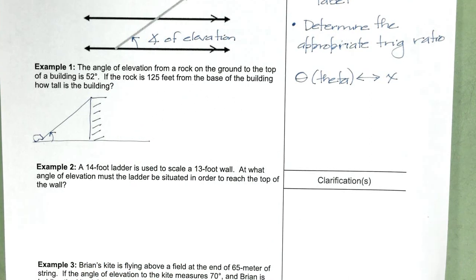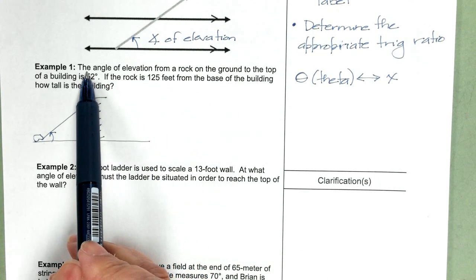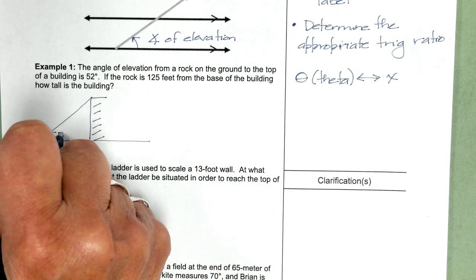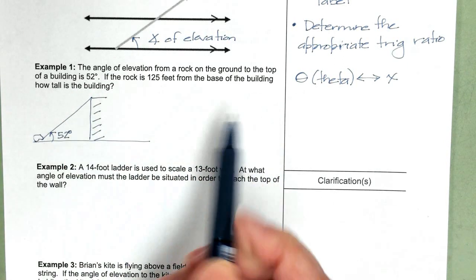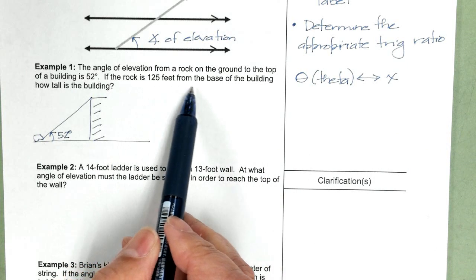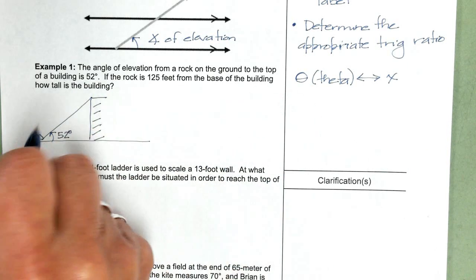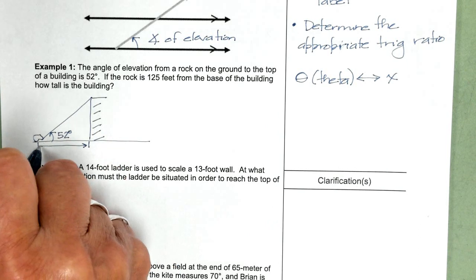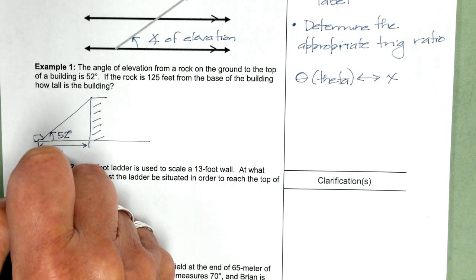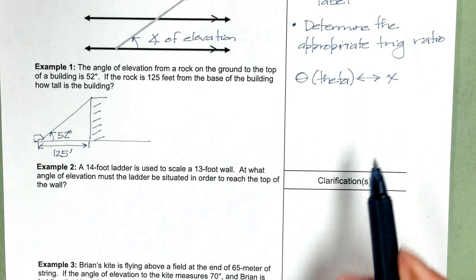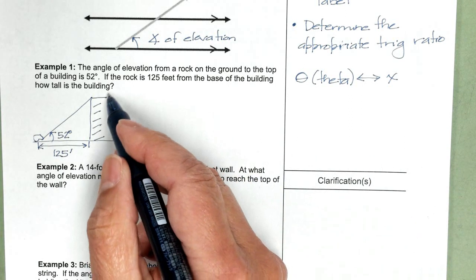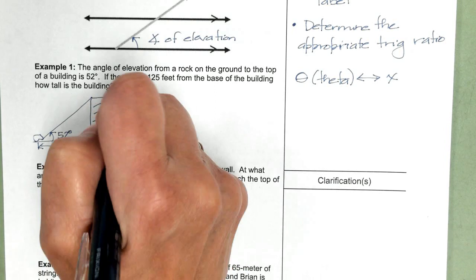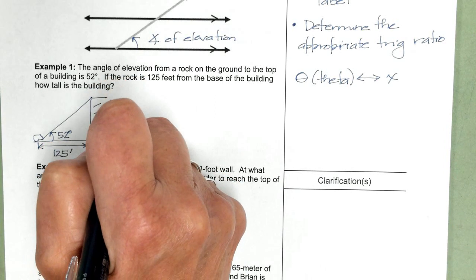Now we're going to put in information. We're going to label it. Angle of elevation, 52 degrees. So I'm going to mark that here. The rock is 125 feet from the base of the building. So this is 125 feet. And we want to know how tall is the building. So we are looking for H.